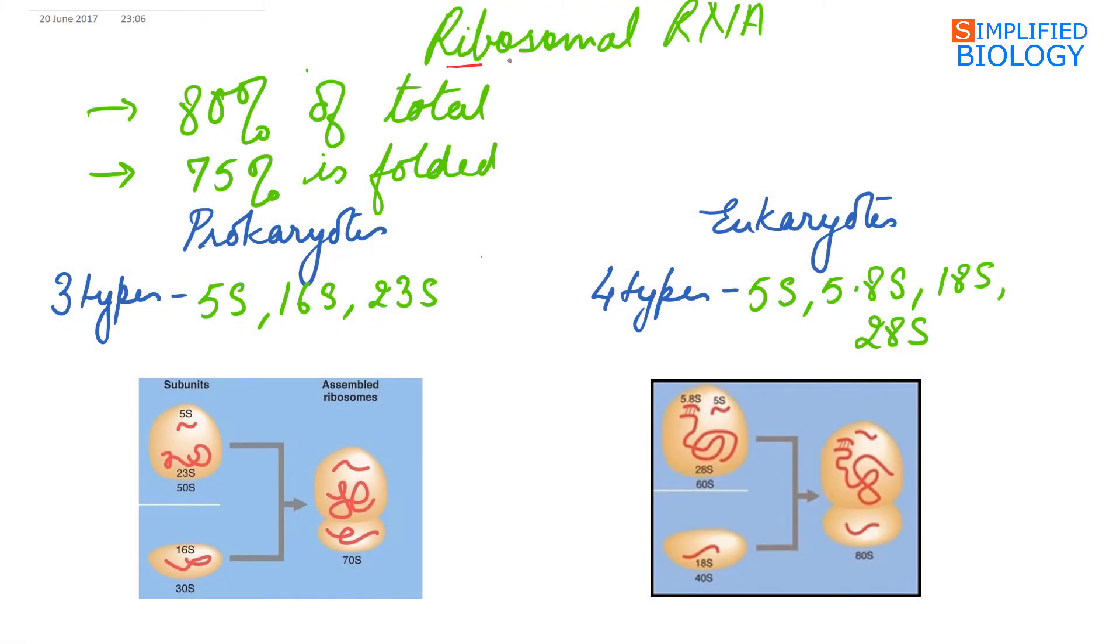Ribosomal RNA constitutes 80% of the total RNA, while 75% of the ribosomal RNA is folded upon itself, helping to form the three-dimensional structure of ribosomes.